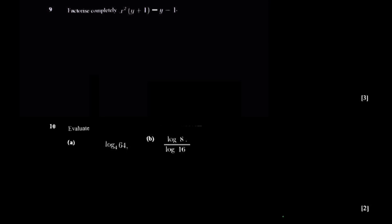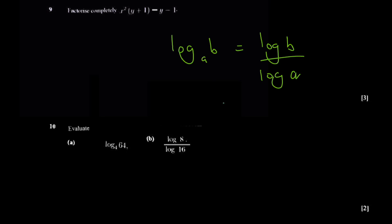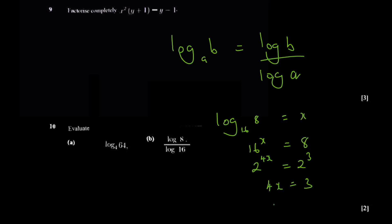There is another method using the change-of-base law: log base a of b equals log b over log a. So log 8 over log 16 can be written as log base 16 of 8. Set that equal to x, so 16 to the power x equals 8. Express both as powers of 2: 2 to the 4x equals 2 to the 3, so 4x equals 3, giving x equals 3 over 4. Same answer.